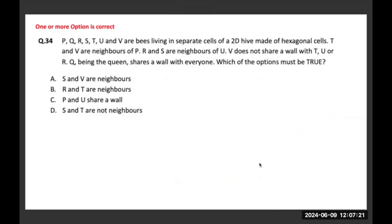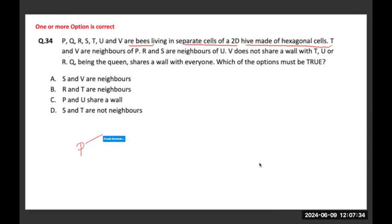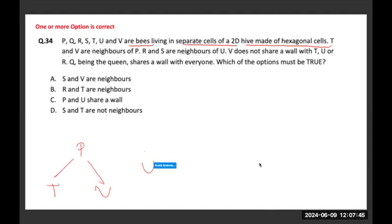P, Q, R, S, T, U, and V are living in separate cells of a 2D hive made of hexagonal cells. T and V are neighbors of P. R and S are neighbors of U. V does not share a wall with T, U, and R. Q, being the queen, is in the center — so she shares a wall and has to be in the center. I'll just keep drawing the arrangements with these conditions.